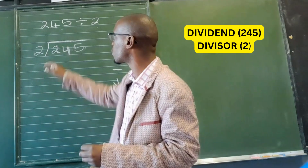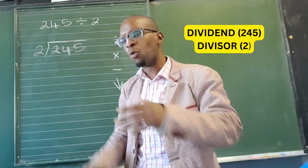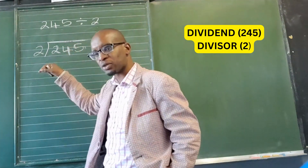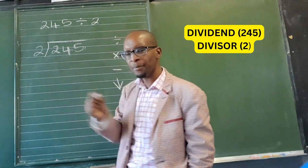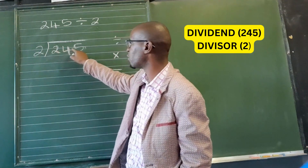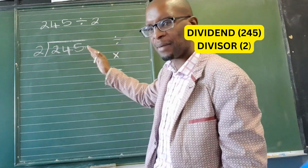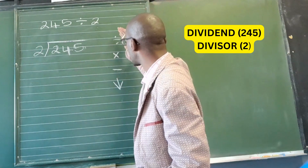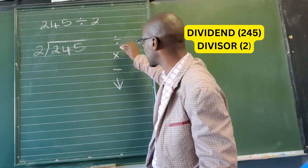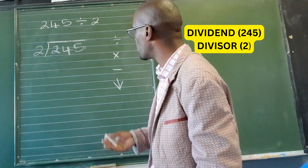Our dividend, 245, is the number that we are breaking up, and the number 2 is our divisor — the number we are using to break this number up. So when we are doing long division, we are trying to find out how many times does 2 go into 245. I would also recommend that next to your sum you write down the steps and tick them off as you go.